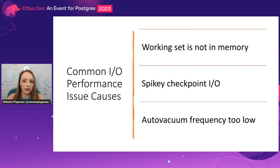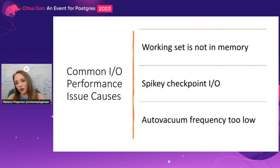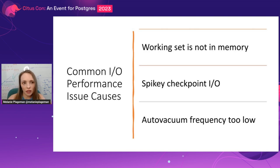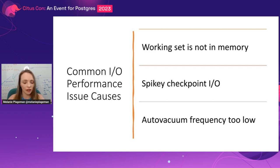Another common impediment is issues around WAL IO and checkpointer misconfiguration — that's a pretty common reason people see IO bottlenecks. And then autovacuum: tuning autovacuum is notoriously finicky, it really depends on your workload, and the out-of-the-box settings are going to be good for no one, basically. If autovacuum is not running frequently enough, or the workers aren't being aggressive enough, that kind of thing.